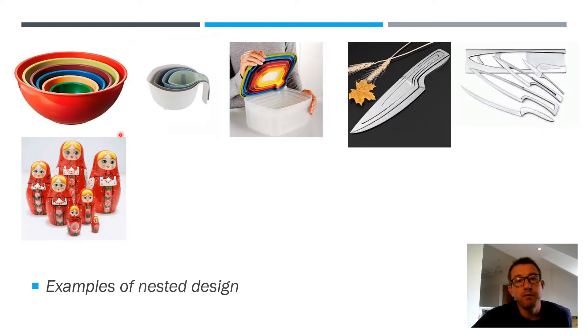As you can see here, we've got a number of nested products. Quite often kitchenware is used, things are sitting inside, they're nesting inside each other. I particularly like the knife nesting feature, that's quite a clever and genius idea, how one blade sits inside the other. And the classic example, as you know, is the Russian dolls. One sits inside the other.